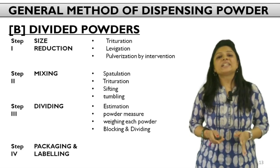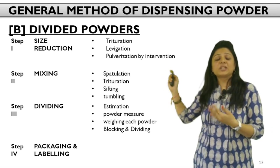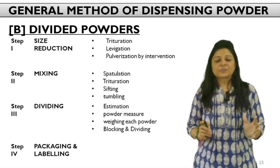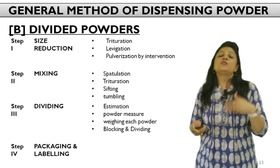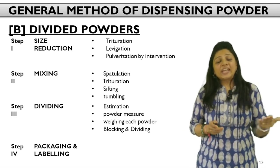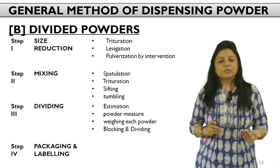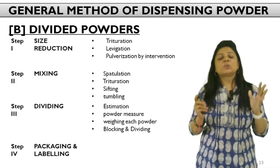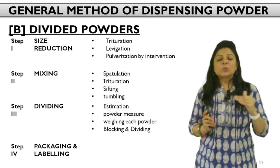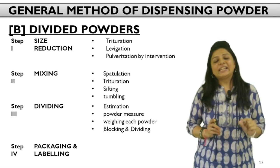If you are dispensing divided powders, the first two steps remain the same — size reduction and mixing. But in the third step, you have to divide the entire mixture into single individual doses. That dividing can be done by estimation (if you have expertise), by weighing each individual powder using a weighing scale, by using a measure like a spoon or spatula, or by using the dividing and blocking technique where you form a block on a tile and divide it into equal number of blocks, each forming a single dosage form. Finally, package and label the formulation.